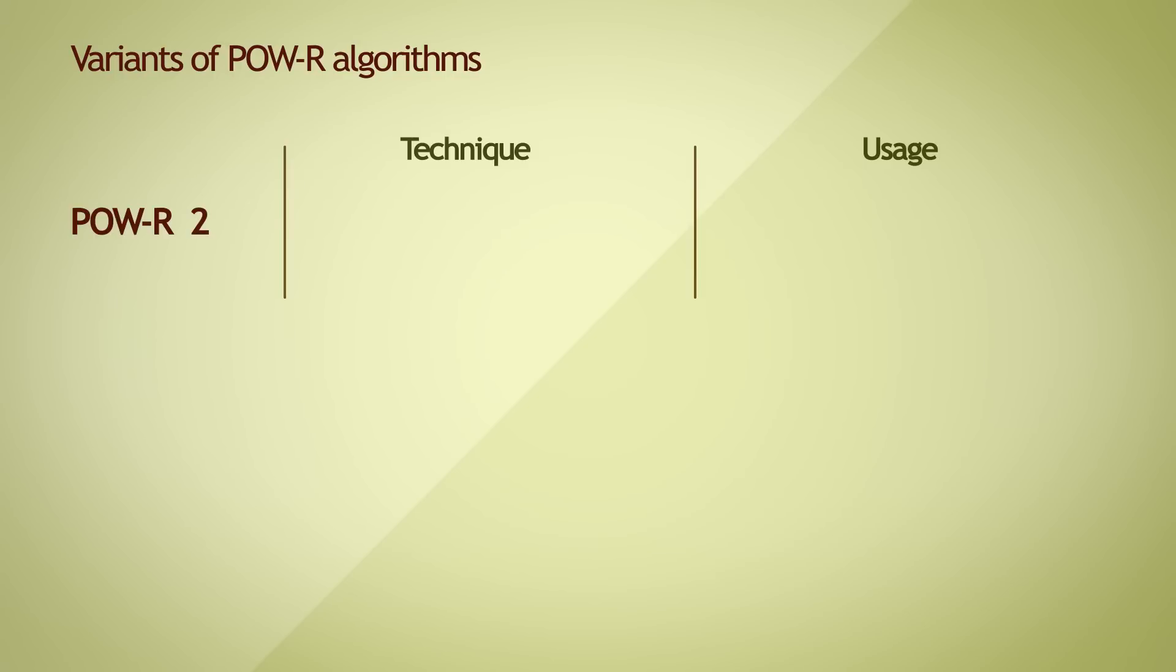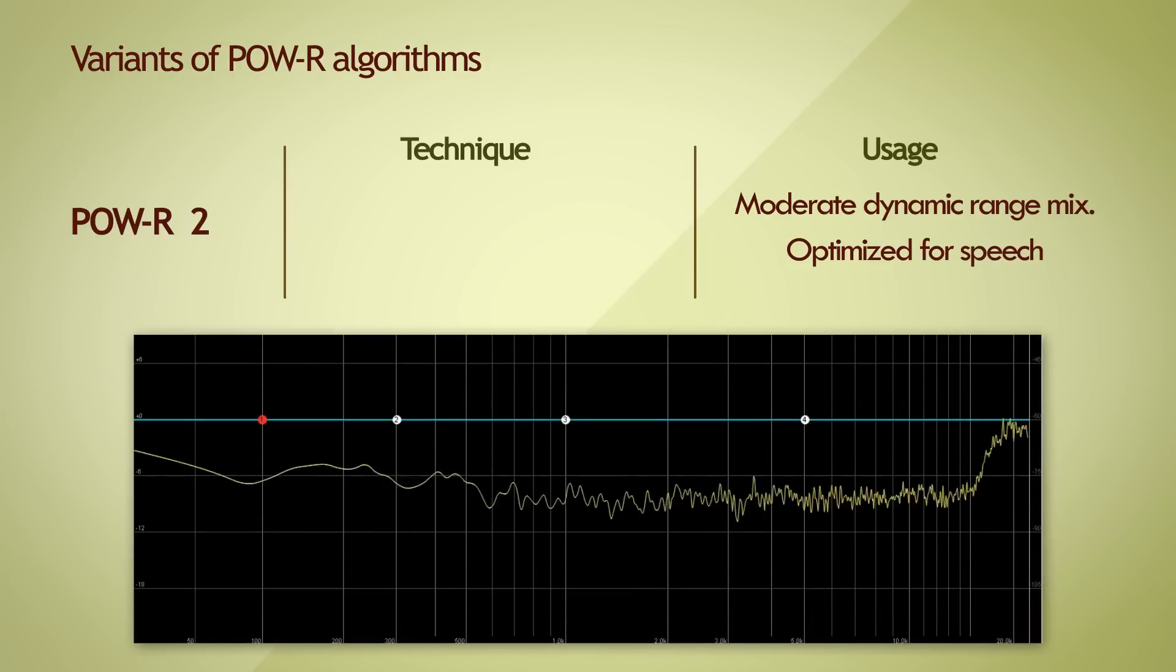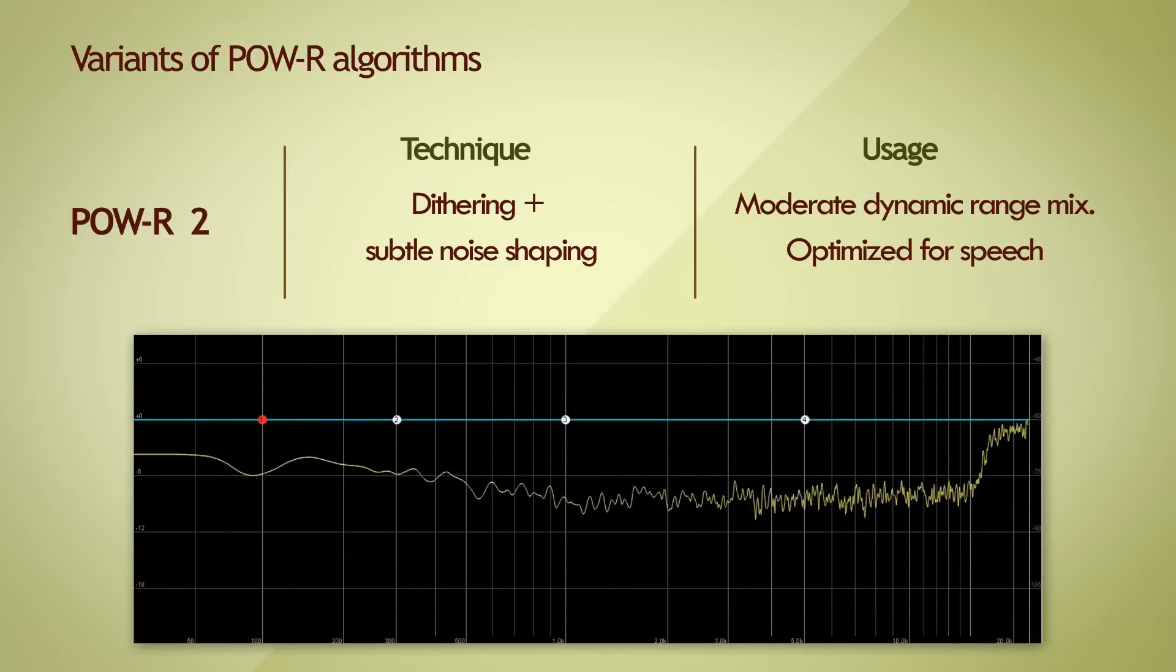The POW-R 2 algorithm is used with speech. It includes very subtle noise shaping that attenuates noise at around 2kHz, and amplifies it at around 14kHz and upwards.